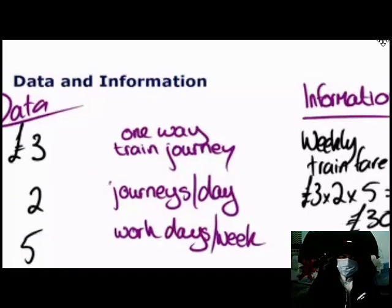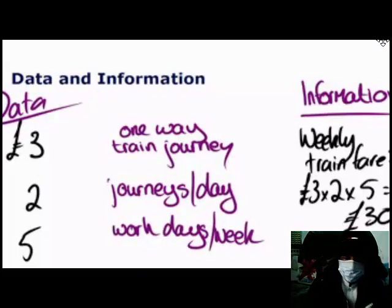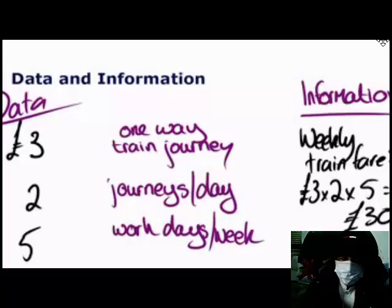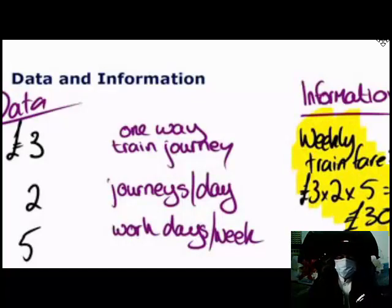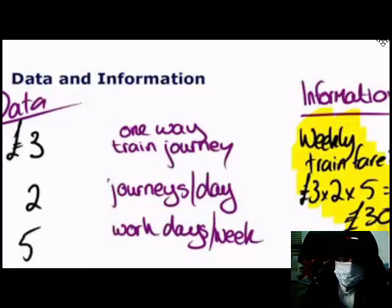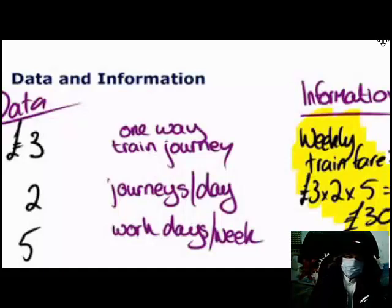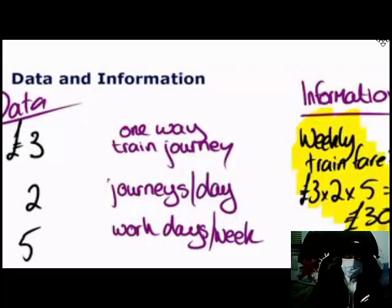What we see here is that data is raw, unprocessed information, whereas information is data which has been processed into some meaningful format that we can use to help make decisions. For example, if I'm doing my monthly budget I know I need to include thirty pounds for train fares, or perhaps I can use this to find a cheaper way of getting to work by comparing it to bus journey prices. Information is something meaningful — we can use it to help us plan for the future and make decisions.